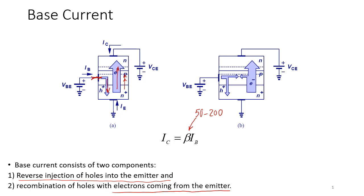Beta is generally a number between 50 and 200, and it is always given to you. Just like when I give you a resistor and tell you it's, say, a 100-ohm resistor, for a bipolar transistor one of the things I always have to provide is the beta. Beta tells you the ratio between the large collector current and the small base current, which includes both the recombination component and the hole injection component.